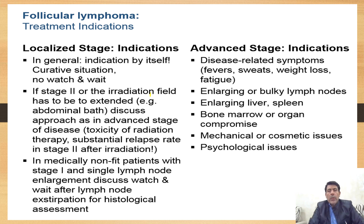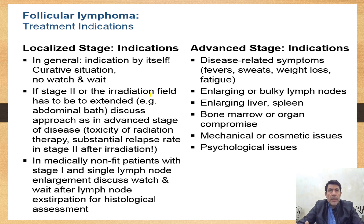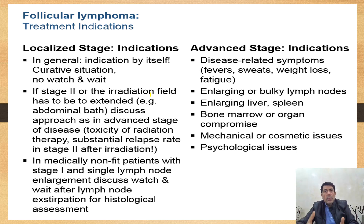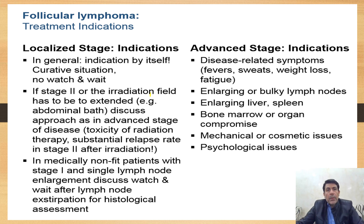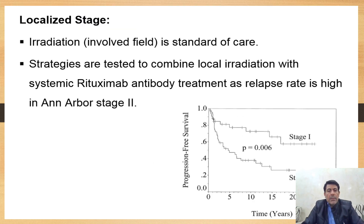For treatment of Non-Hodgkin lymphoma, there are indolent and aggressive types. For indolent type, we must discuss with the patient their age and whether to proceed with watch-and-wait or active treatment. For localized stages one and two, involved-field radiation is a standard of care. Strategies also include combining local irradiation with systemic rituximab monoclonal antibody therapy.